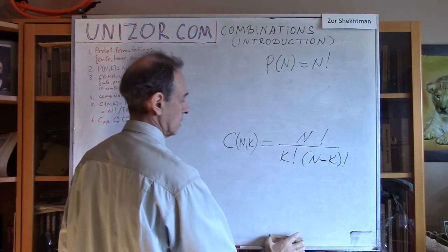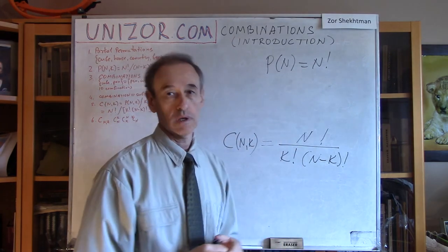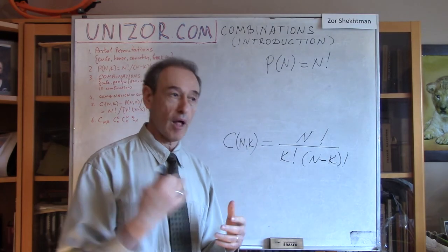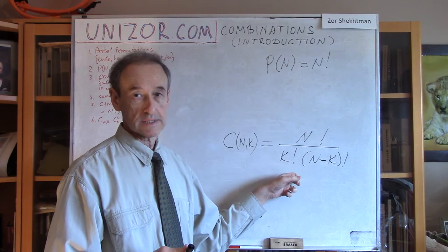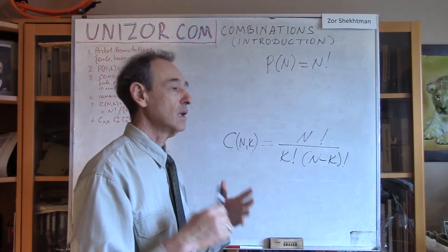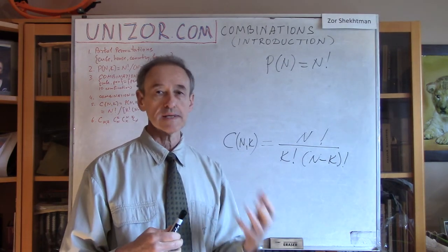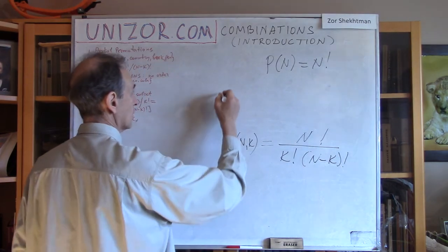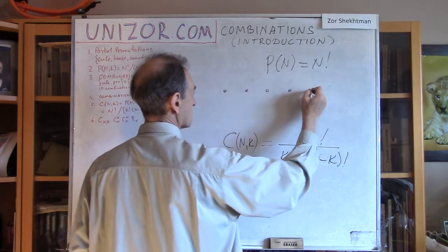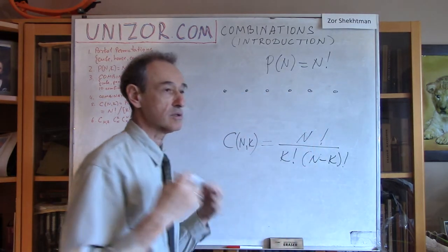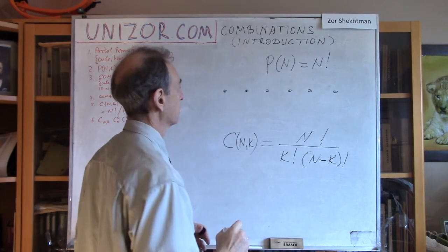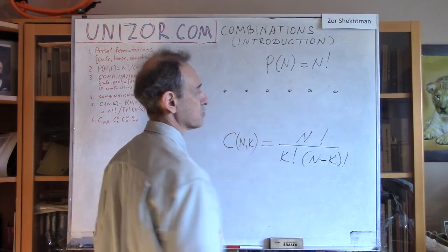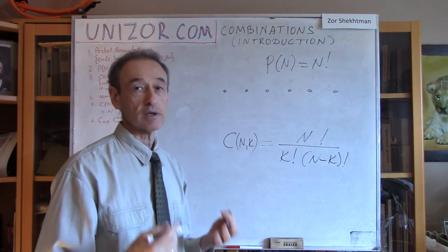Here is another logical explanation of why this formula is correct. Let's imagine that we have to choose a subset using the following logic. We put these objects into a certain order — order is important now. Let's say we have 1, 2, 3, 4, 5, 6 objects and we want a subset of 2 objects. So we want the number of combinations of 2 out of 6.